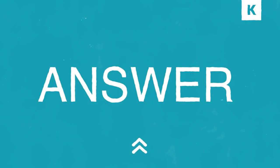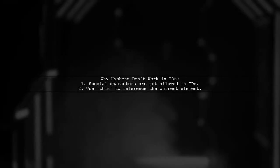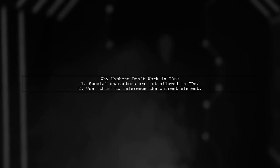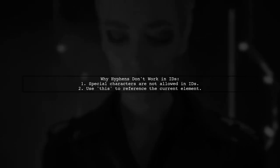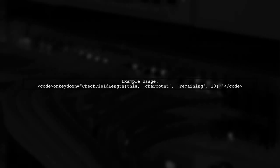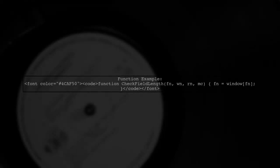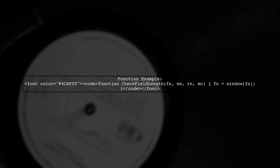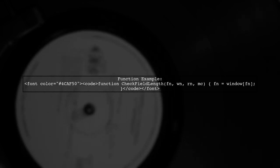Let's now look at another user-suggested answer. Using a hyphen in an element's ID or name can cause issues in JavaScript, as special characters like hyphens are not allowed. You can use this in your function to get the current text box. Alternatively, you can pass the ID as a string to your function, which allows you to find the element by its ID.